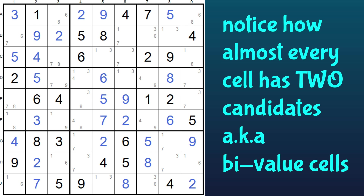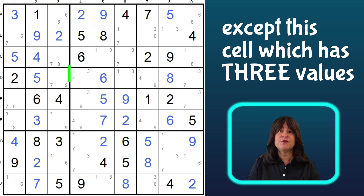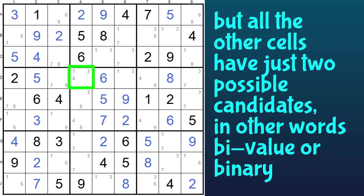Notice how every cell has two possibilities, otherwise called bivalue cells — two values in each cell — except for this cell, which has three numbers. But all the other cells are bivalue.